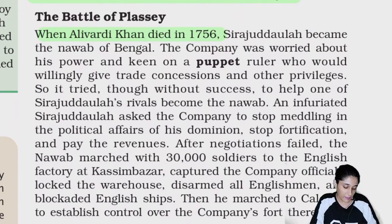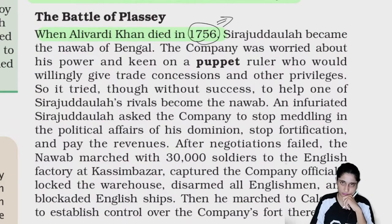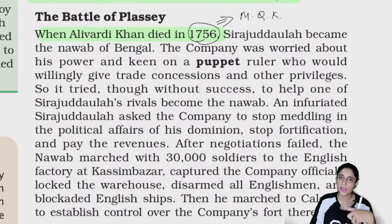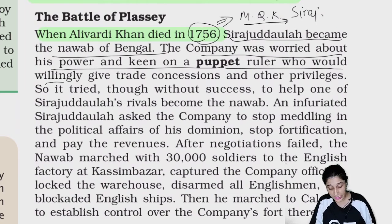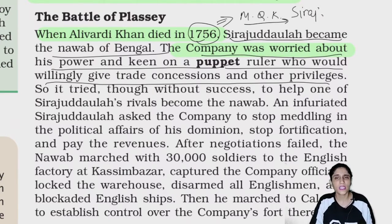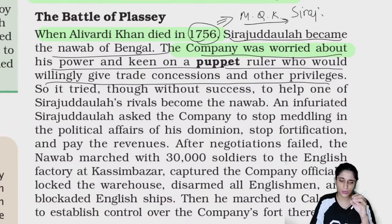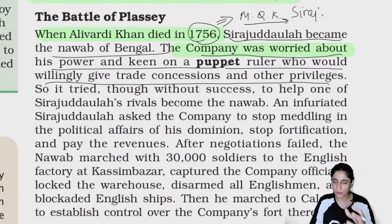When Ali Vardy Khan died in 1756, Sirajodolla became the Nawab of Bengal. The company was worried about his power and keen on a puppet ruler who would willingly give trade concessions and other privileges. The company was very disappointed when Sirajodolla became the Nawab because he was a very strong leader — company chahti thi ek cut-putli jaisa ruler jo Britishers ki policies ko sign kare bina kisi resistance ke.